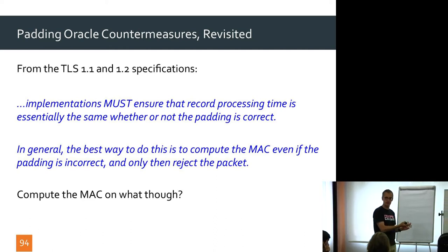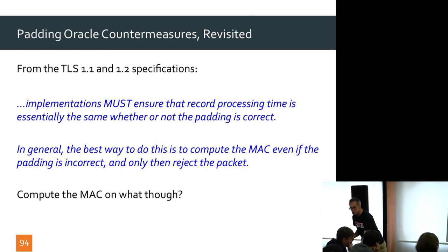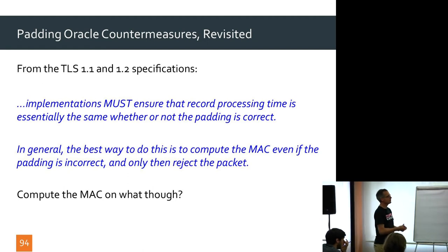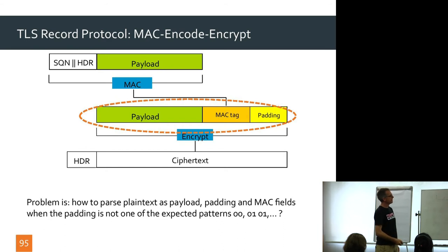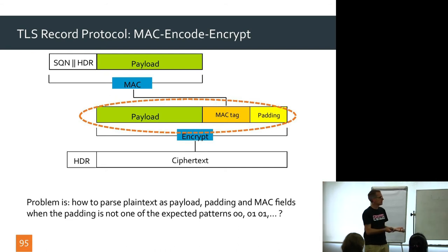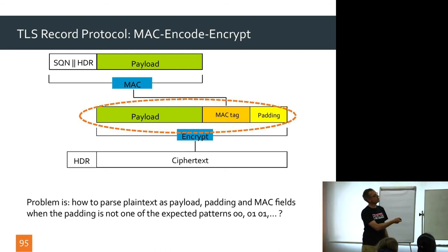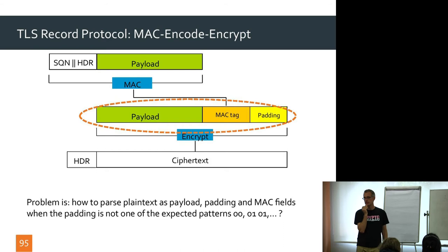The question is: what should you compute the MAC on when the padding is invalid? You have a buffer with payload, MAC tag, and padding. If the padding isn't one of the valid patterns, how do you parse the buffer? You don't know where the payload ends because you don't know how much padding there is — the formatting is wrong. It's a genuine software engineering problem.